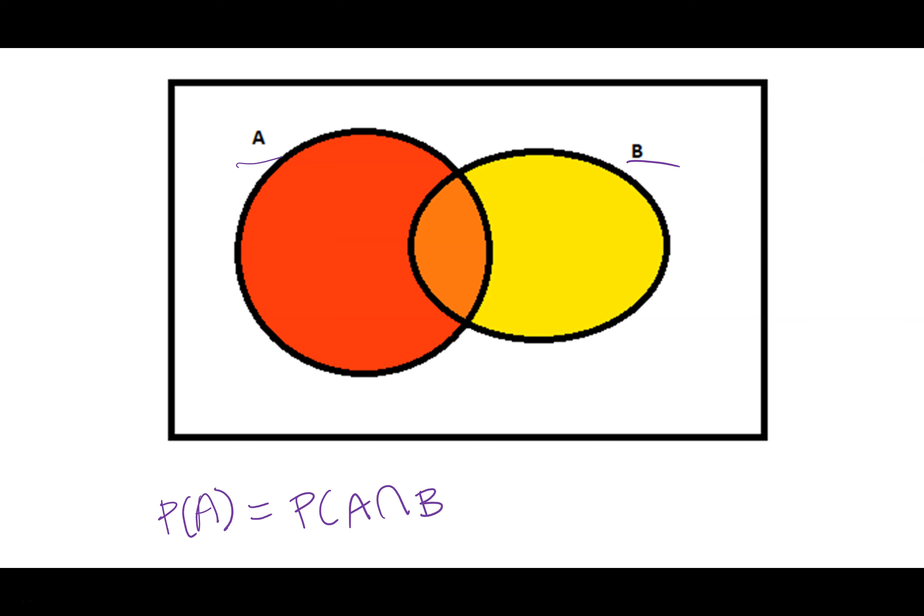plus the probability of A and not B. So if I want to break down those parts right here, A and B, this is A and B right here, this center part, this orange.